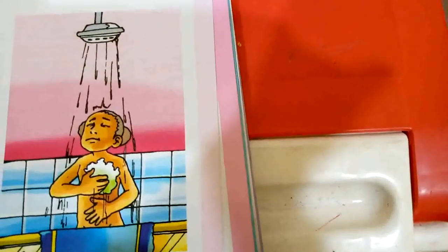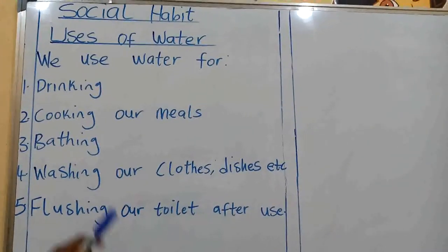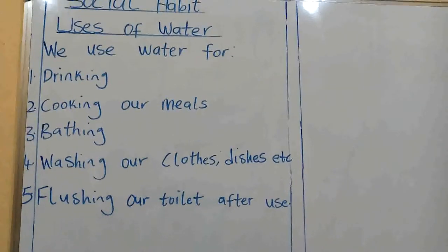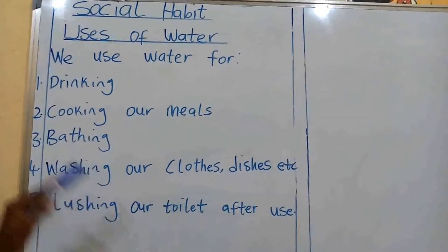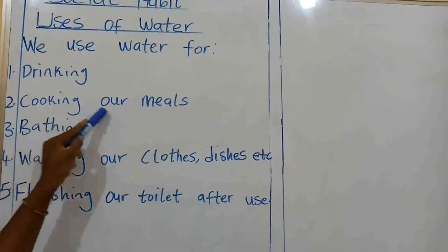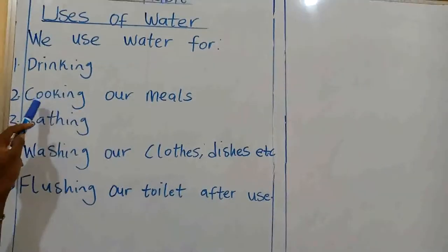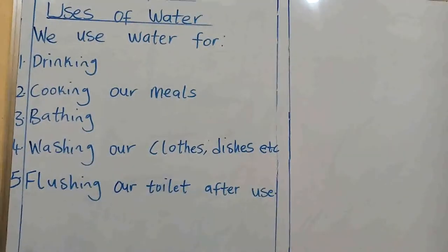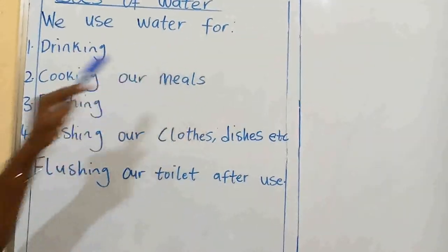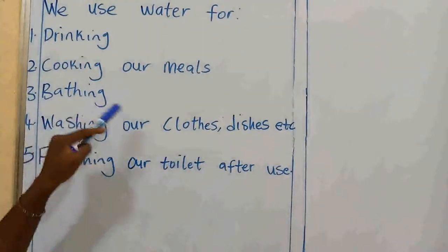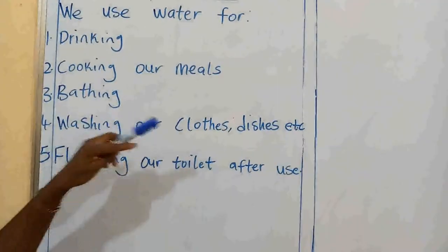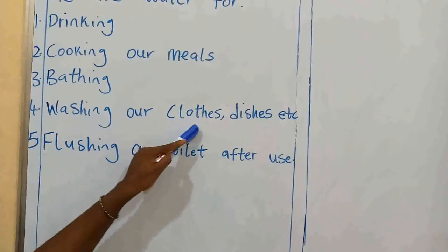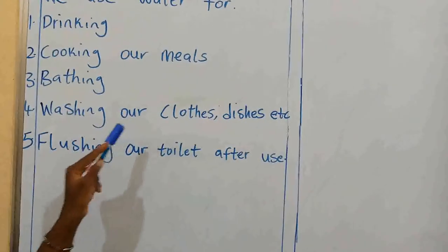Let's look at the board together. The uses of water are: number one, drinking; number two, cooking our meals; number three, bathing; number four, washing our clothes, dishes, etc. You can use water to wash your clothes, your car — everything you need to wash. Even when you want to wash your hands during this pandemic, you use water. So water is very useful.